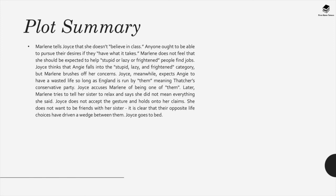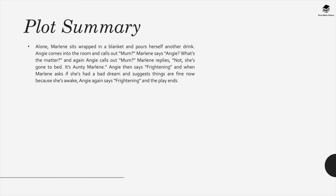Joyce goes to bed. Alone, Marlene sits wrapped in a blanket and pours herself another drink. Angie comes into the room and calls out, 'Mum.' Marlene says, 'Angie — what's the matter?' Angie calls out again, 'Mum.' Marlene replies, 'She's gone to bed. It's Auntie Marlene.' Angie then says, 'Frightening.' When Marlene asks if she had a bad dream and suggests things are fine because she's awake, Angie again says, 'Frightening.' And the play ends.